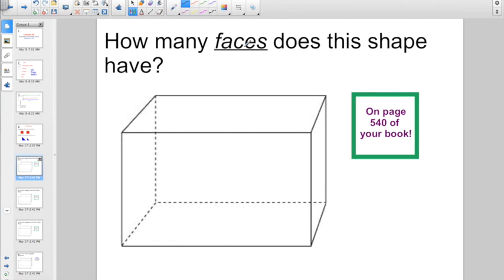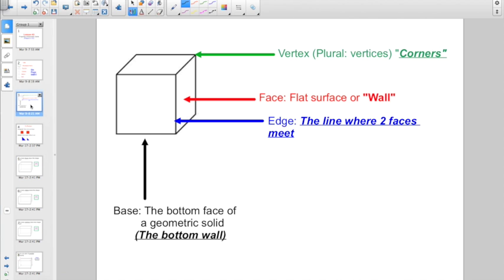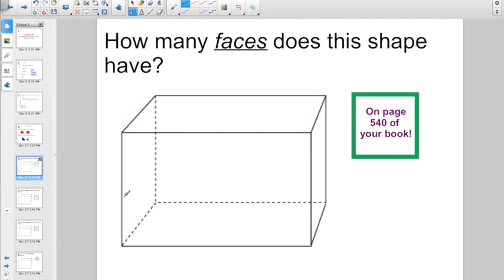How many faces does this shape have? If you remember, faces are the flat surface or walls. We are looking at how many walls. We know this is in three dimension and it is rectangular. So, you're going to have the front wall, the right hand wall, the back wall, and the left wall. That's four so far.